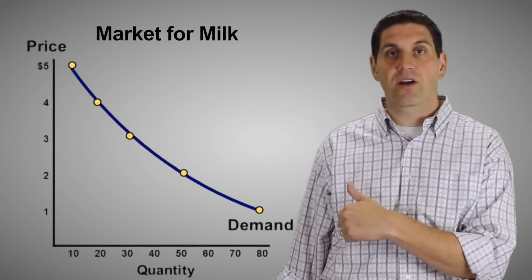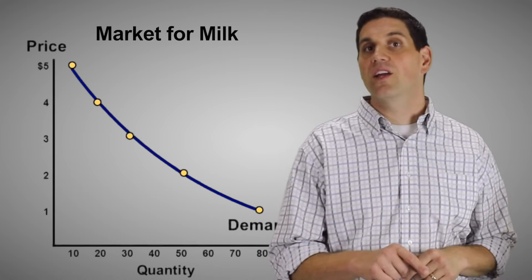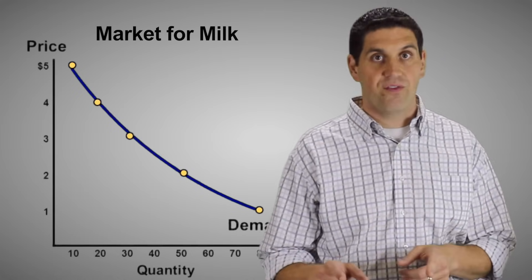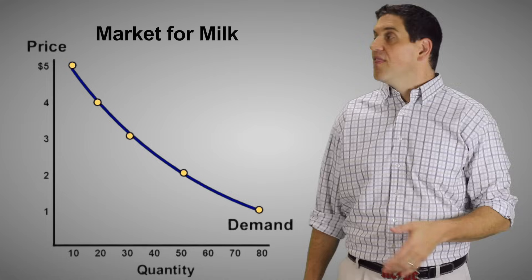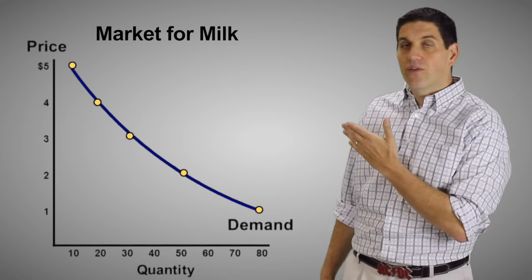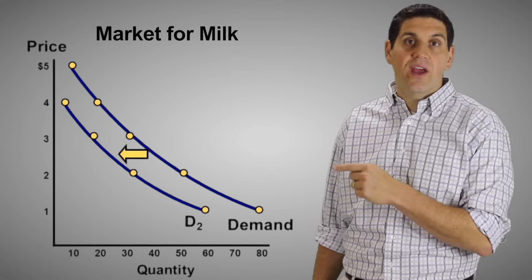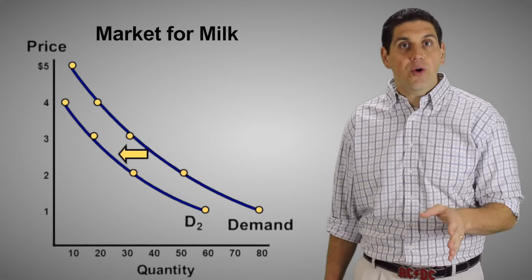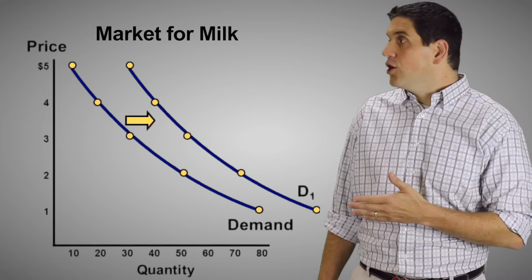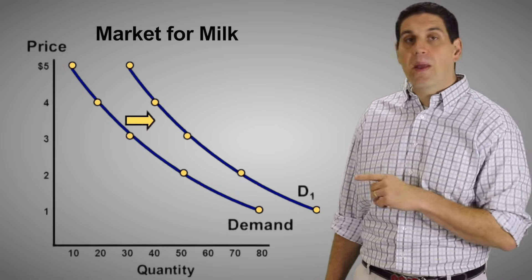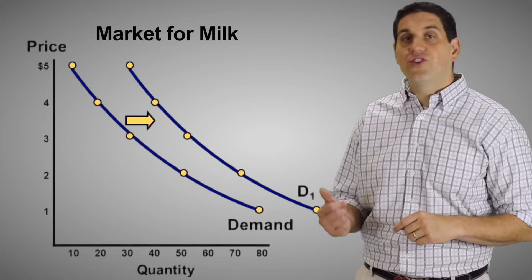So a change in price moves along the demand curve, but if something else other than price changes, it'll actually shift the demand curve. For example, let's say a study comes out that says milk causes baldness. That would cause the entire demand curve to shift to the left. At every single price, people are going to buy less and so the curve shifts to the left. That's called a decrease in demand. The opposite is an increase in demand. And so at every single price, people want to buy more. So the demand curve shifts to the right.